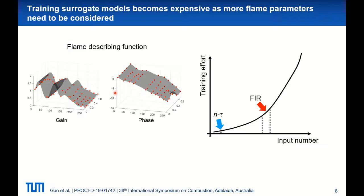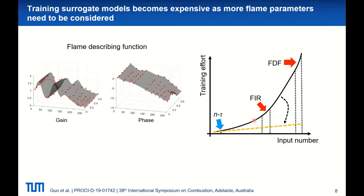For the nonlinear case, the situation is even worse as we are using a flame describing function. Each data point in gain or phase measured at discrete frequency and forcing amplitude constitutes an input parameter that we need to consider. The corresponding training effort would be prohibitive in practice. Now the question is: can we develop a new surrogate scheme to flatten this curve and effectively break the curse of dimensionality?